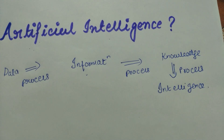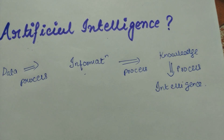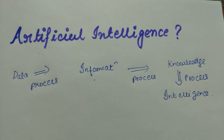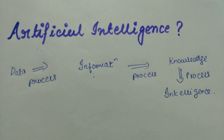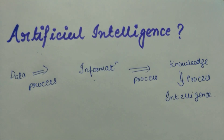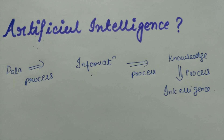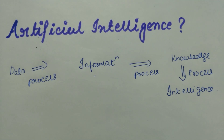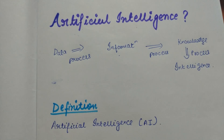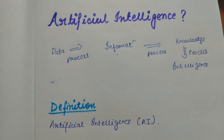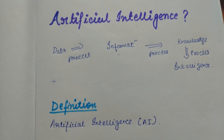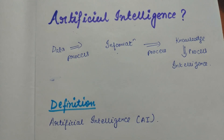Combining this, we come to the conclusion that artificial intelligence is a branch of computer science which deals with the study and creation of computer systems that exhibit some human intelligence.